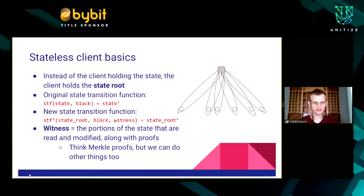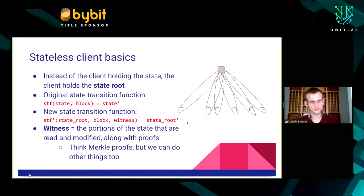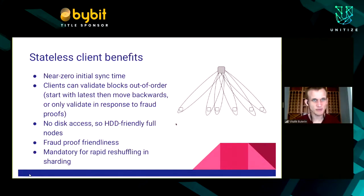Normal clients hold the state, take in a block, and modify the state to get a new state. Stateless clients only hold the state root, ask for a block plus a witness, and update the state root to produce a new state root. One benefit is near-zero initial sync time — if you have a chain of block headers you're willing to trust, you can start verifying new blocks almost immediately.